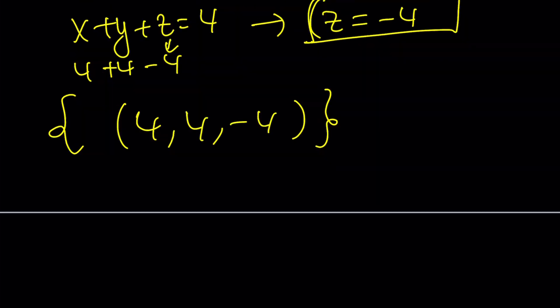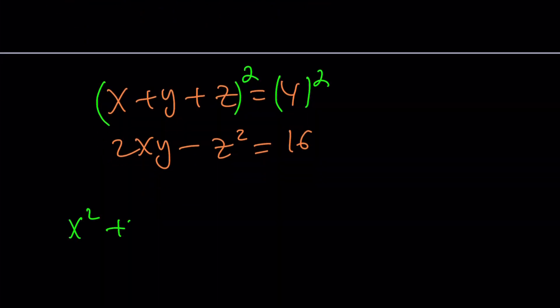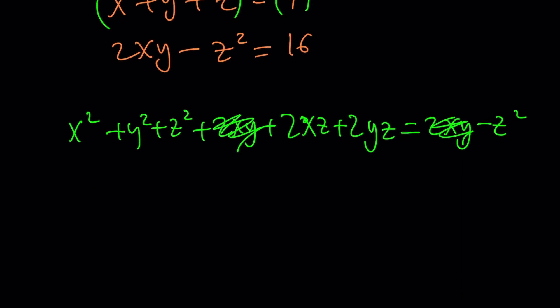All right, let's look at some alternatives here. Could I solve this problem differently? Let's take a look at it. x plus y plus z equals 4, and then 2xy minus z squared equals 16. I could possibly do the following. I could go ahead and square both sides in the first equation because that's also going to give me 16, and then maybe set these equal to each other. Let's see if that works. x squared plus y squared plus z squared plus 2xy plus 2xz plus 2yz equals 16 which equals 2xy minus z squared.